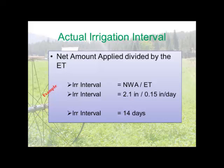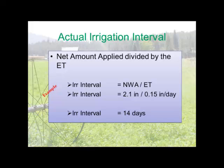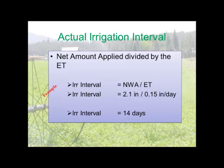Applying 2.1 inches net at 0.15 inches per day ET means 14 days later that water will be gone and we'll have to come back and irrigate again — provided there's been no rainfall and evapotranspiration stayed at 0.15 inches per day over those 14 days, which may not always be the case.